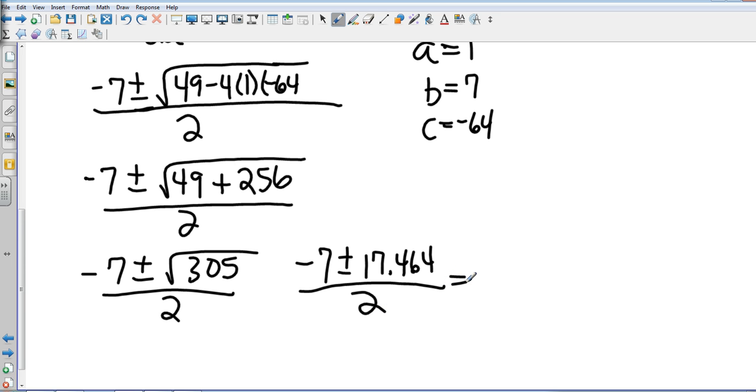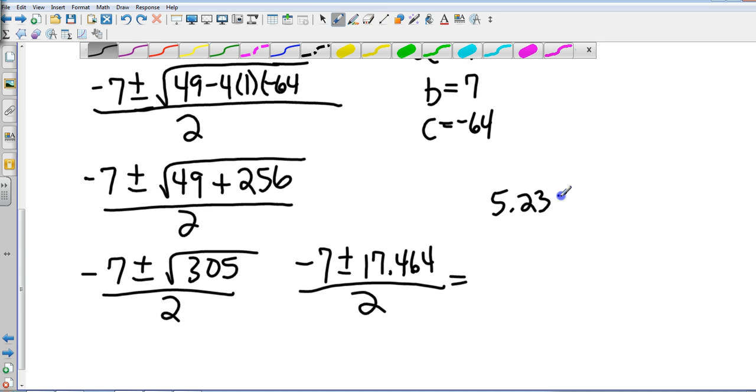So my first one is negative 7 plus 17.464. That comes out to be 5.23, and this is going to ask round to the nearest tenth, and so that's going to be approximately 5.2.